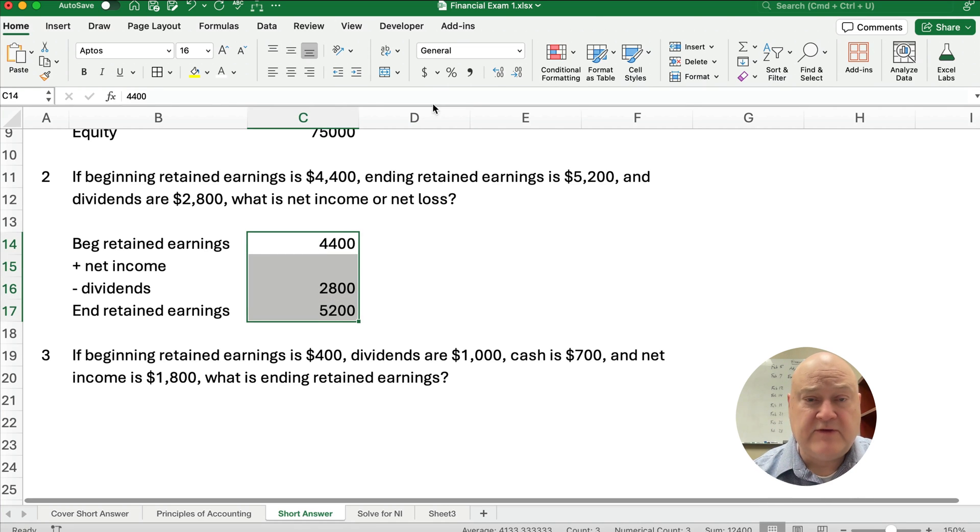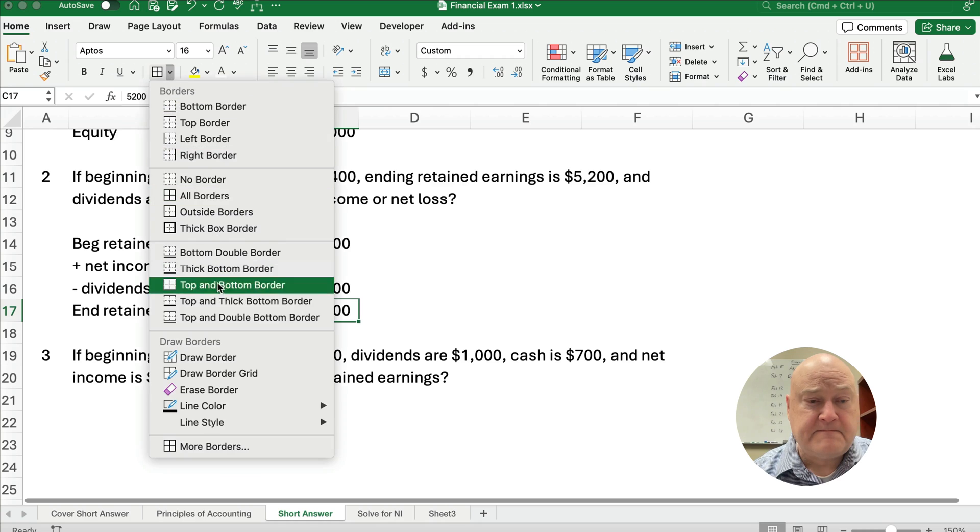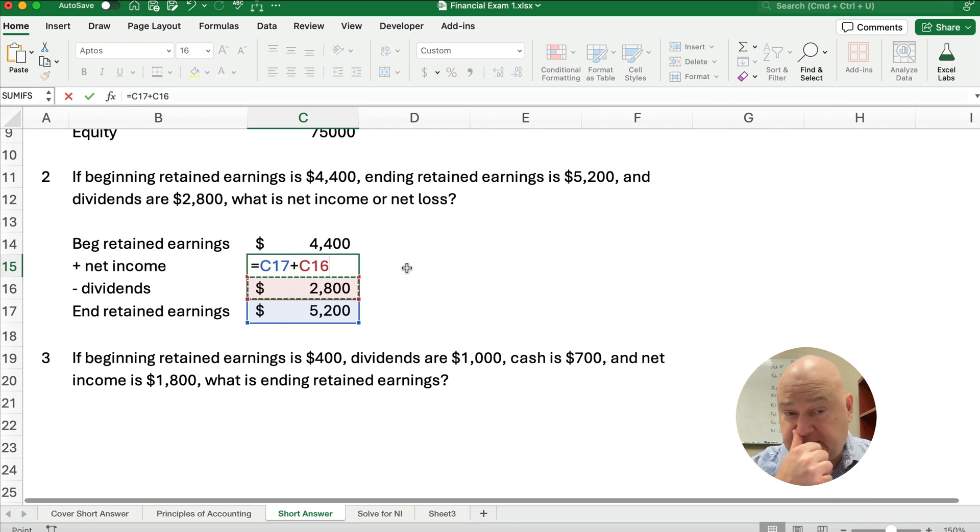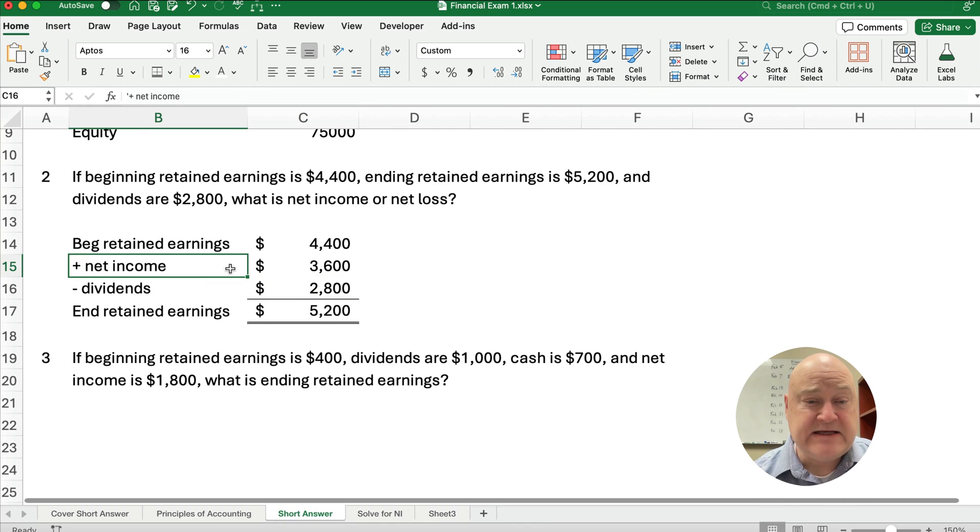Normally what we would do if we're given this information, we would take beginning plus net income minus dividends, and we'd end up with our ending number. So what we need to do is work backwards. We need to take the $5,200, and we're going to add the dividends because that's a negative calculation. We do the opposite, and we're going to subtract the $4,400. So we have net income is going to be $3,600.